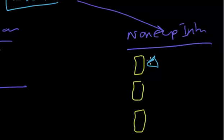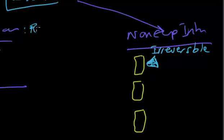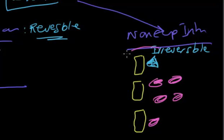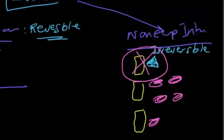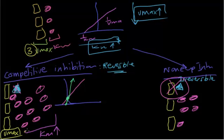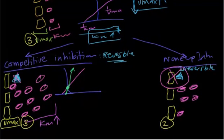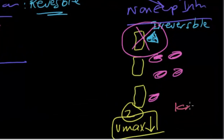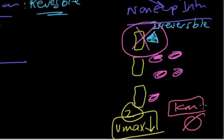For non-competitive inhibitors, there is a drug that binds irreversibly to the enzyme. Even when you increase the number of substrates, you still have problems with the enzymes. As a result, you lose one enzyme — instead of three enzymes as in the control and competitive inhibitors, you only have two enzymes. This means the Vmax in non-competitive inhibitors is decreased, while the KM does not increase.